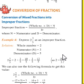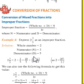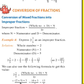We can also use the formula directly. 2 whole 3 by 5 equals whole number into denominator plus numerator, divided by D. So: 2 into 5 in the bracket, plus numerator 3, whole divided by denominator 5. 2 into 5 is 10, plus 3 is 13, divided by 5. Our answer is 13 divided by 5. I hope you understand how to convert a mixed fraction into an improper fraction.